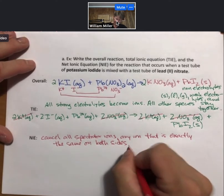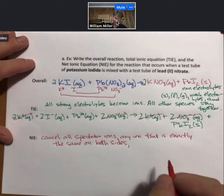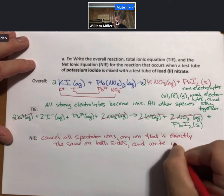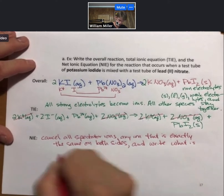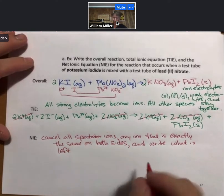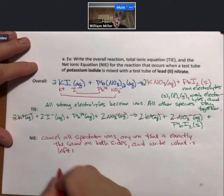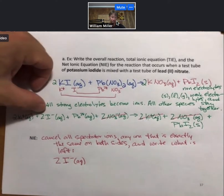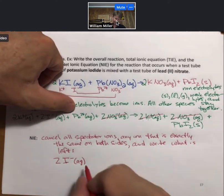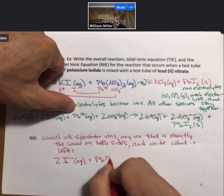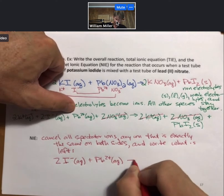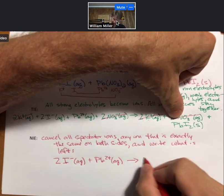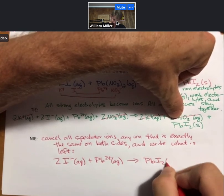So cancel all spectator ions, definition of those, and write what is left. We're left with two iodide ions plus a lead 2 ion forming lead iodide solid.